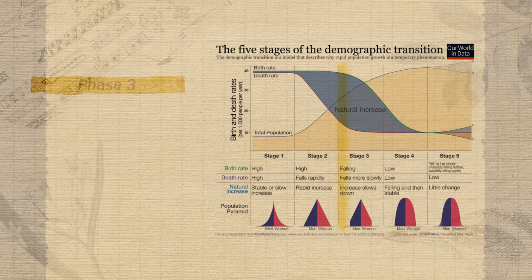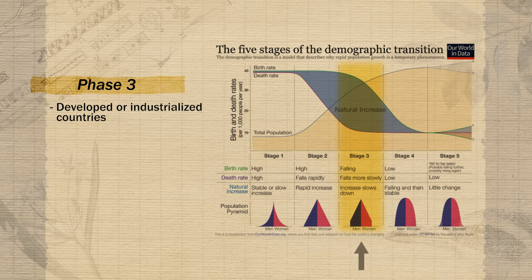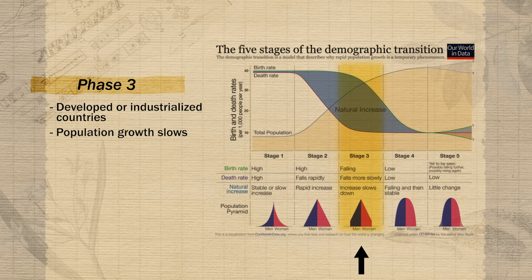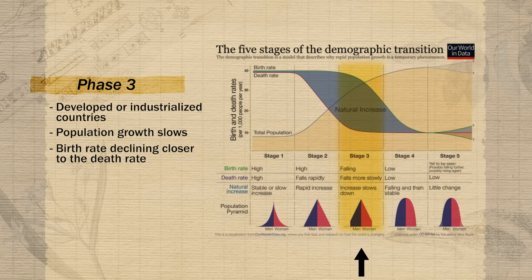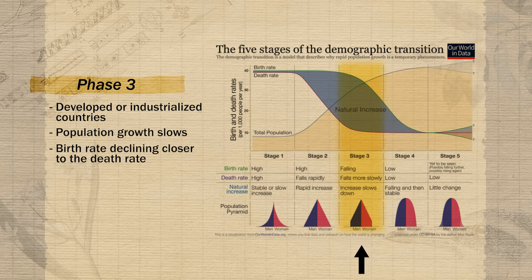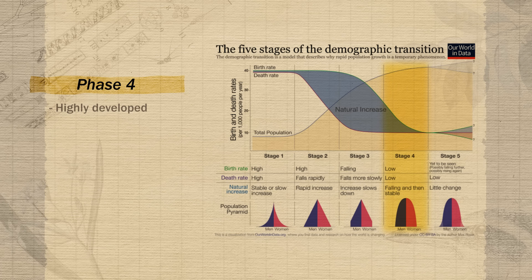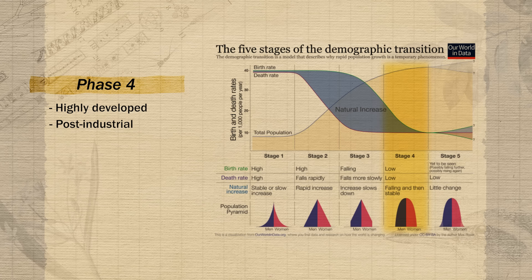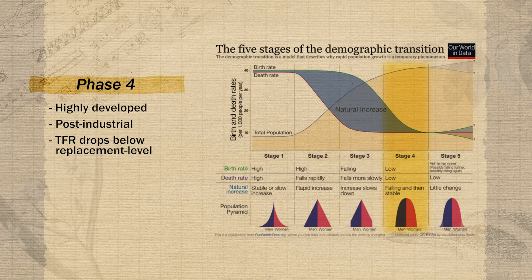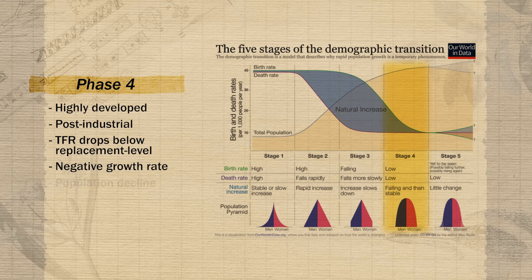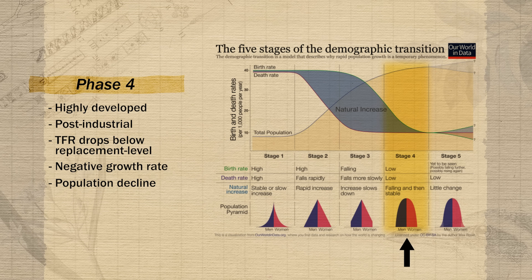In stage three countries, the process of industrialization is considered complete — these are often called developed or industrialized countries. Population growth rate slows because birth rate is now declining closer to the death rate. Women are receiving increased educational and career opportunities, and both men and women are spending longer in school, delaying having children. Stage three countries generally have a TFR approaching replacement level of 2.1. Stage four countries are considered highly developed or post-industrial, with such high access to educational, career, and family planning resources that TFR falls well below replacement level. This means the country may begin to experience negative growth or population decline, visible in age structure diagrams where the pre-reproductive cohort is smaller than the reproductive cohort.